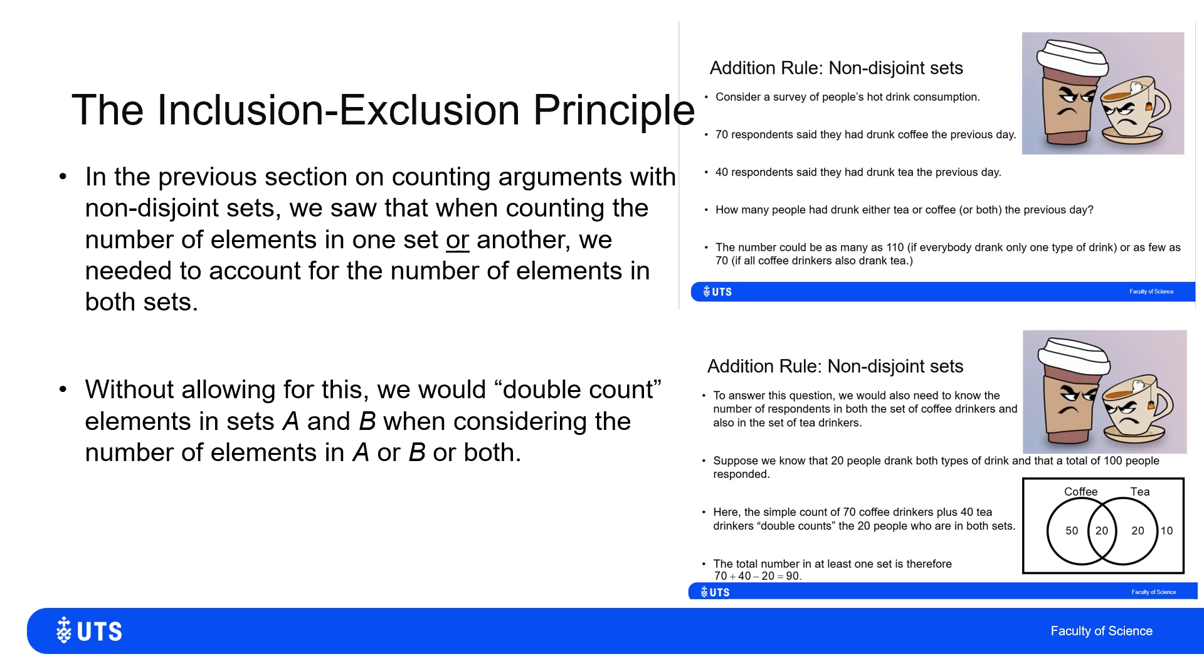It could be as few as 70 if all 70 of the coffee drinkers were also tea drinkers. So I'd need to know how much the sets overlap in order to consider how much double counting there is. How many people are counted in both set A and set B to know how many people are in sets A or B or both.